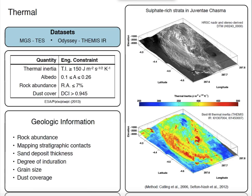Visible data can give you quite a lot of information for photogeology, but thermal data available from instruments like Themis or MGS TES can also tell you a lot. Thermal data gives many secondary products: rock abundance, thickness of a sand deposit, degree of induration, grain size, and dust coverage. Interestingly, many of these are constrained when choosing landing sites. These figures are from the landing site user manual issued by ESA and Roscosmos in 2013, giving rough quantities to satisfy, including thermal inertia, albedo, rock abundance, and dust cover.